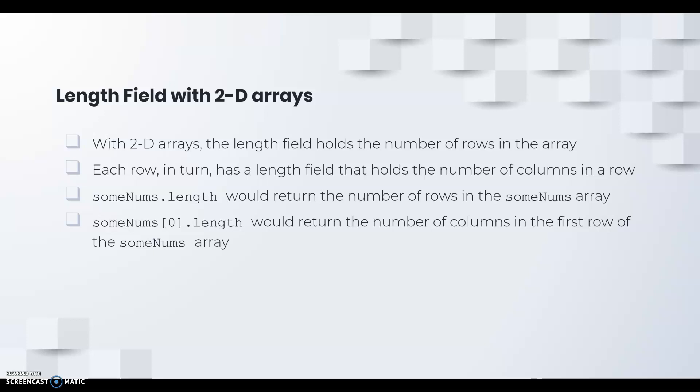With 2D arrays, the length field holds the number of rows in the array. Each row in turn has a length field that holds the number of columns in that particular row. For example, sumnums.length would return the number of rows in the sumnums array, whereas sumnums[0].length would return the number of columns in the first row of the sumnum array because you're using index position zero. If we used index position one, then we would get the number of columns that was in the second row.